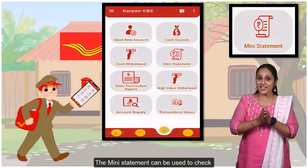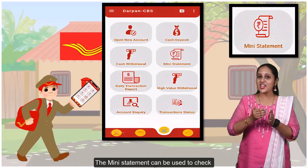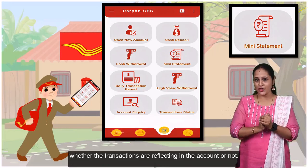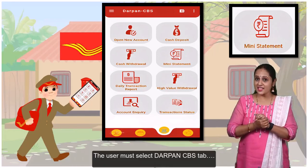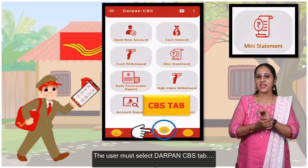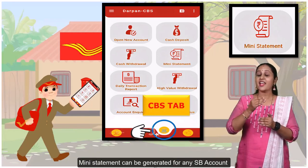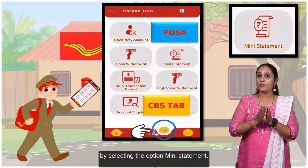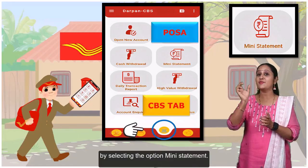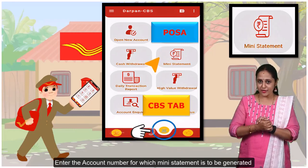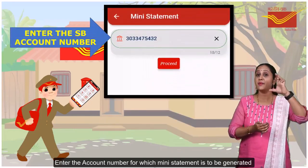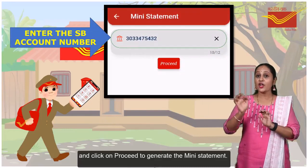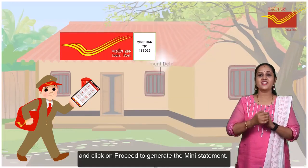The mini statement can be used to check whether the transactions are reflected in the account or not. The user must select the Darput CVS tab. Mini statement can be generated for any SB account by selecting the option mini statement. Enter the account number for which the mini statement is to be generated and click on proceed to generate the mini statement.